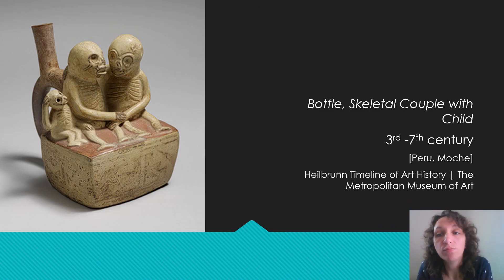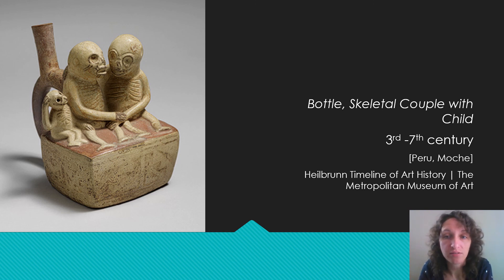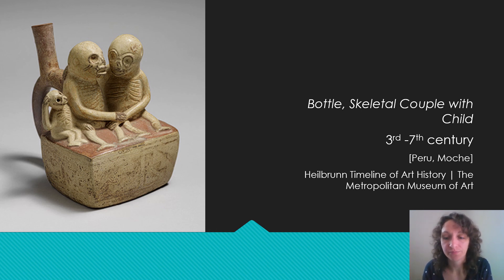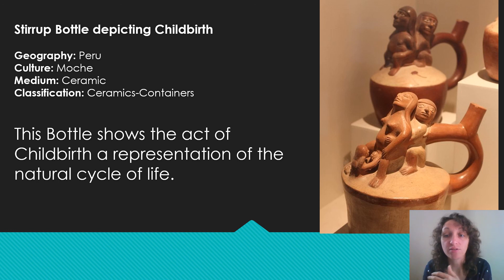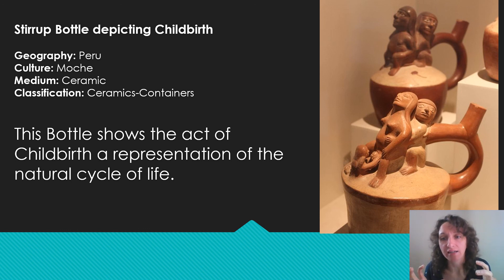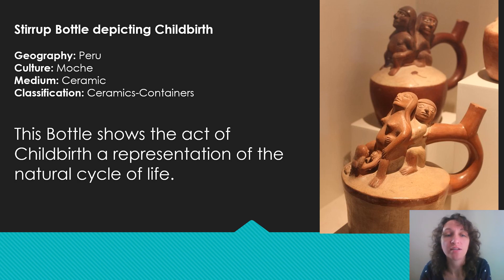Now let's talk about Moche ceramics — specifically these bottles with figures on them. This is a skeletal couple with a child, with a sort of tender family moment, the two figures holding hands. Here are multiple stirrup bottles depicting childbirth — you can actually see the act of childbirth represented in ceramic. It's interesting because ceramic is a static object, yet the act of childbirth is very much an action. These bottles are representing the natural cycle of life.